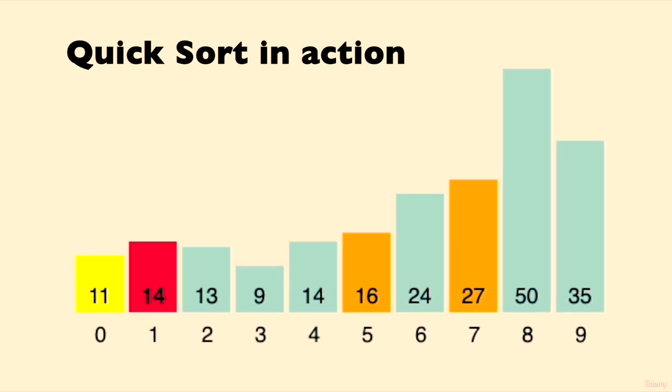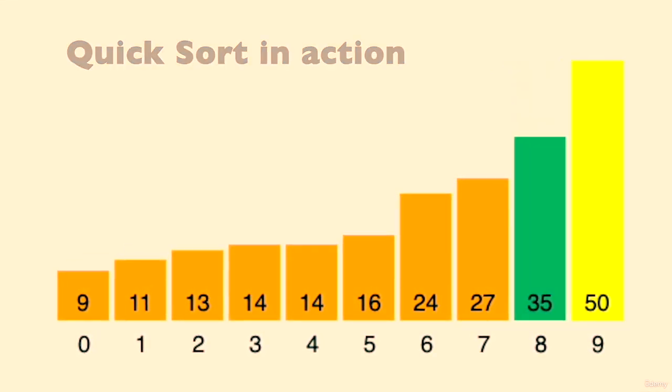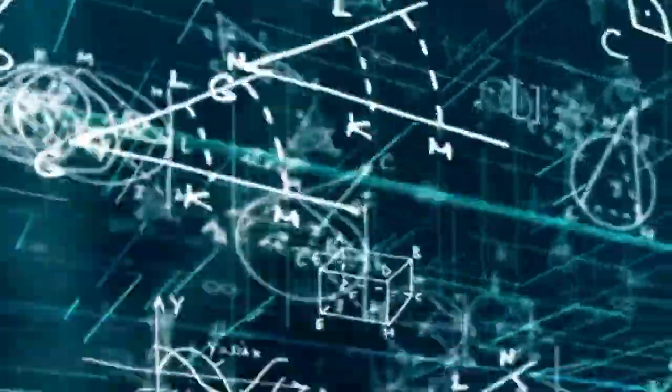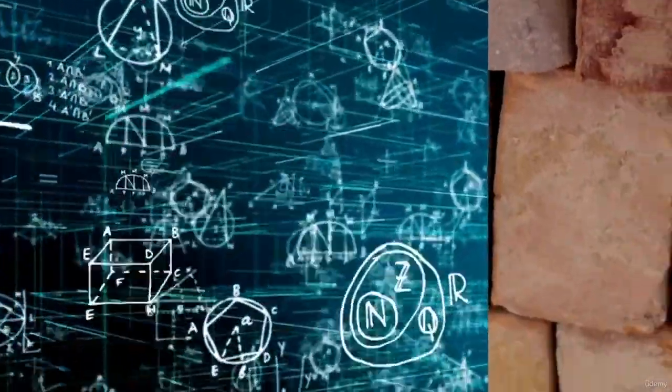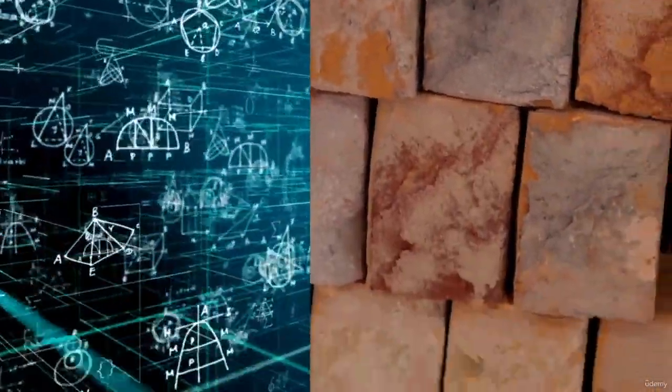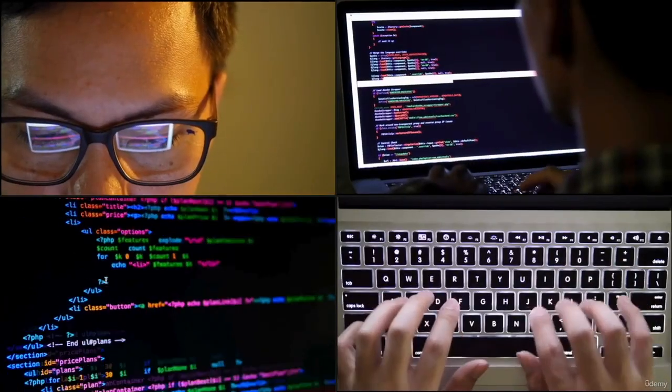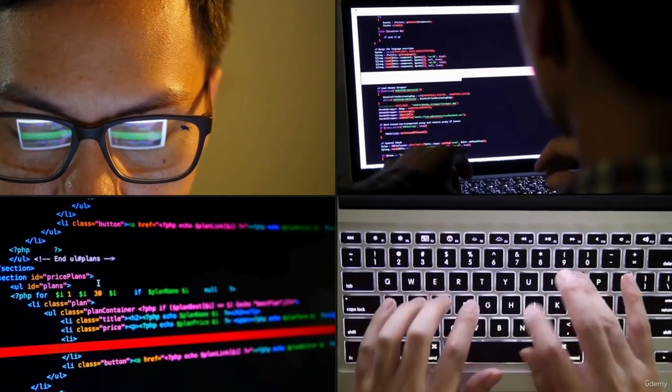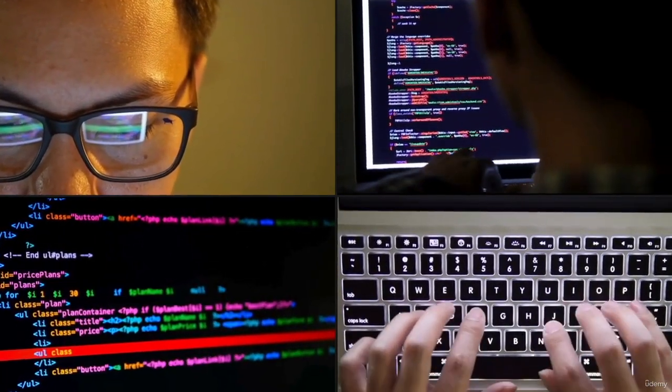Together they become the heart of any program. Algorithms process the data structures, making decisions and manipulating information to achieve the desired outcome. Studying algorithms alone is like having a recipe without ingredients—it remains theoretical. Similarly, data structures on their own are just building blocks without a plan. The true magic happens when we combine them. This synergy is why you will find algorithms and data structures taught hand in hand.